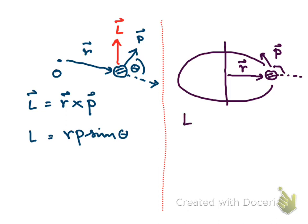It means the magnitude of the angular momentum equals R times P times sine(π/2), and since sine(π/2) equals 1, we have the magnitude equal to R times P. Writing P as M times V, the magnitude of the angular momentum of an object moving in a circular path about a fixed axis becomes R times M times V.